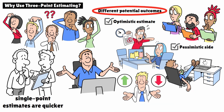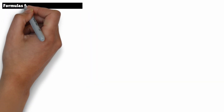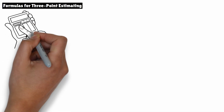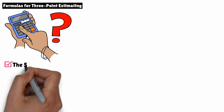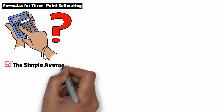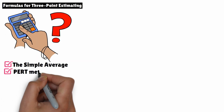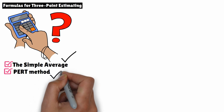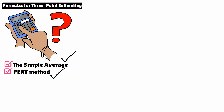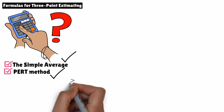Now let's talk about how to calculate three-point estimates. There are two commonly used methods: the simple average and the PERT method. Both of these help you arrive at an expected estimate, but they weigh the different scenarios slightly differently.